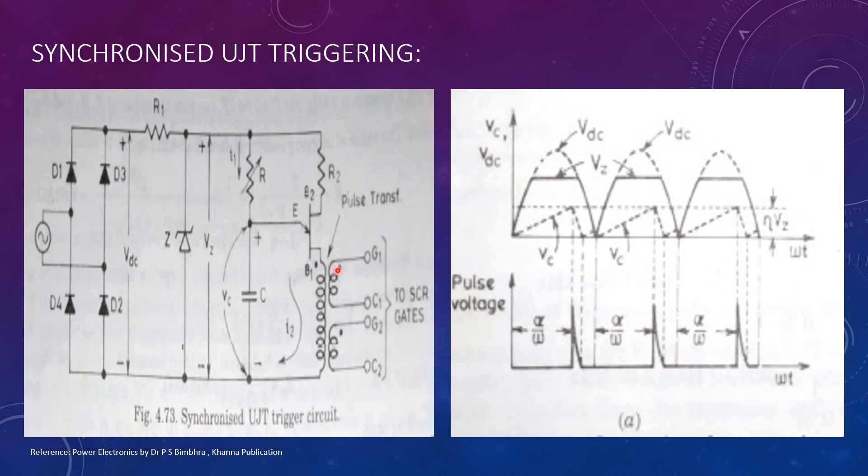Pulses at the two secondary windings feed the same in-phase pulse to two SCRs of a full-wave circuit. The SCR with positive anode voltage would turn on.